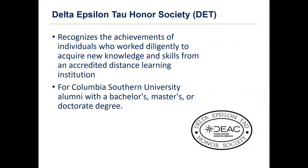The Delta Epsilon Tau Honor Society recognizes achievements of individuals who have worked diligently to acquire new knowledge and skills from an accredited distance learning institution. This is for alumni only — you must have a bachelor's, master's, or doctoral degree and a minimum 3.8 GPA. Benefits include lifetime membership, letters of recommendation if requested, and networking opportunities with all chapters of Delta Epsilon Tau Honor Society.